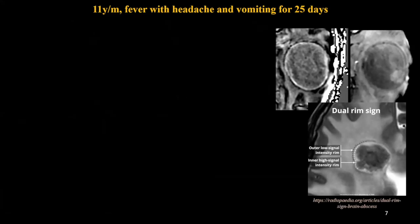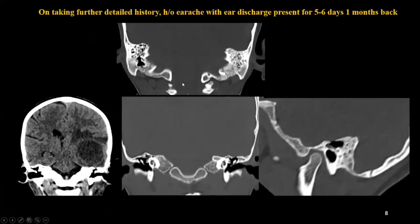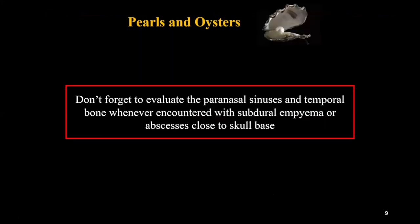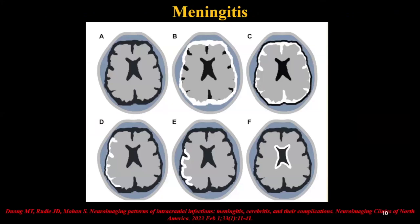We were dealing with an abscess — tumor was ruled out. We proceeded with CT scan, which showed bilateral mastoid sclerosis on the left side and a tegmen breach. This was a case of cerebral abscess secondary to mastoiditis. On further probing, the patient had ear discharge about one month prior, after which symptoms developed. It is very important not to forget to evaluate the paranasal sinuses and temporal bone whenever you encounter subdural empyema or abscesses close to the skull base — including the mastoids, paranasal sinuses, and sphenoid sinus.